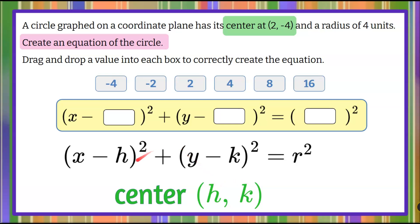So h, when I'm looking for that here in this formula, is going to go here. k is going to go there. So h is 2, so we're going to take 2 and drag it and drop it into the h spot. Our k, our y-coordinate, is negative 4, so we're going to take negative 4 and bring it over to where k goes.